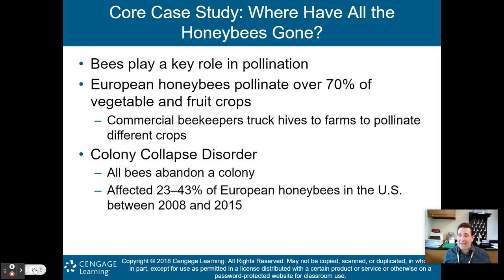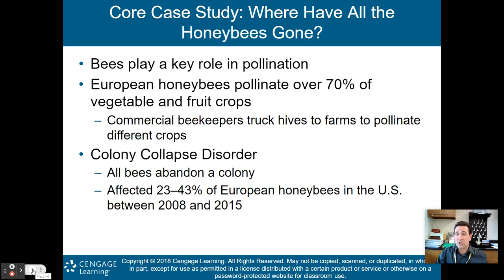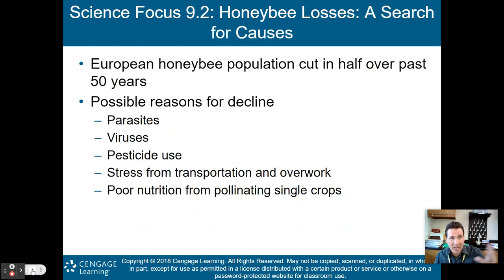What has happened over the past couple of years is something called colony collapse disorder. When this happens, all bees abandon their colony. No one really knows exactly why. It has affected up to 43 percent of European honeybees in the United States between 2008 and 2015. This is an ecosystem service — honeybee pollination. Colony collapse disorder decreases pollination, and the European honeybee population has been cut in half over the past 50 years.